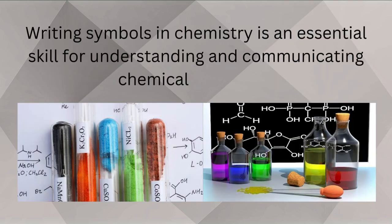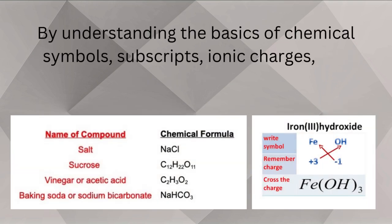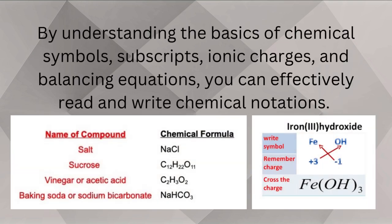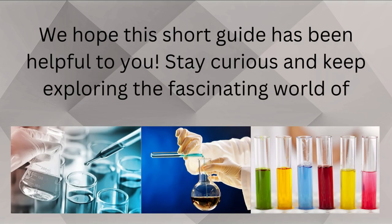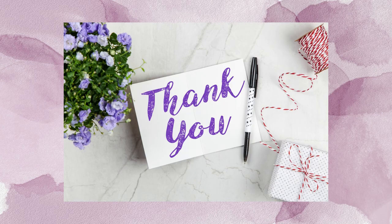Conclusion. Writing symbols in chemistry is an essential skill for understanding and communicating chemical concepts. By understanding the basics of chemical symbols, subscripts, ionic charges, and balancing equations, you can effectively read and write chemical notations. We hope this short guide has been helpful to you. Stay curious and keep exploring the fascinating world of chemistry. Thank you — please like and subscribe to the YouTube channel Chemistry Concepts by Samin Mumtaz.